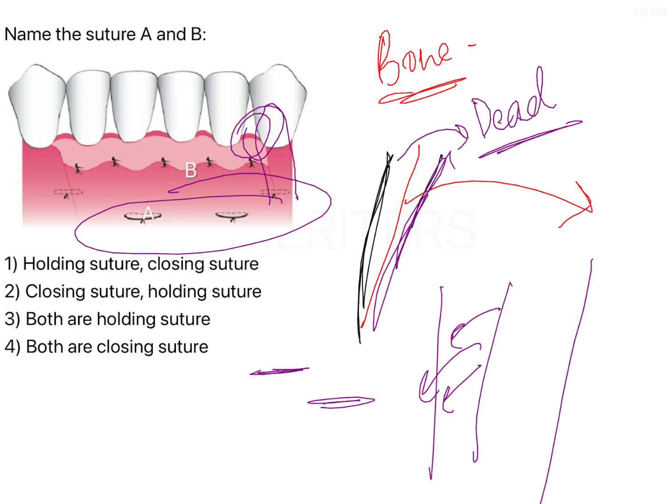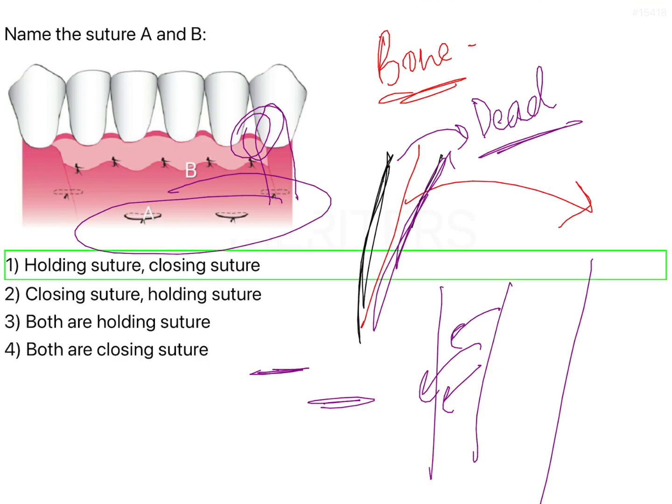On top, when you replace the flap back, you have to suture that area as well, and that is called a closing suture — because you have closed the opening, placed the flap back to its position, and ensured there is no open space present. So A in this diagram is a holding suture, whereas B is a closing suture.